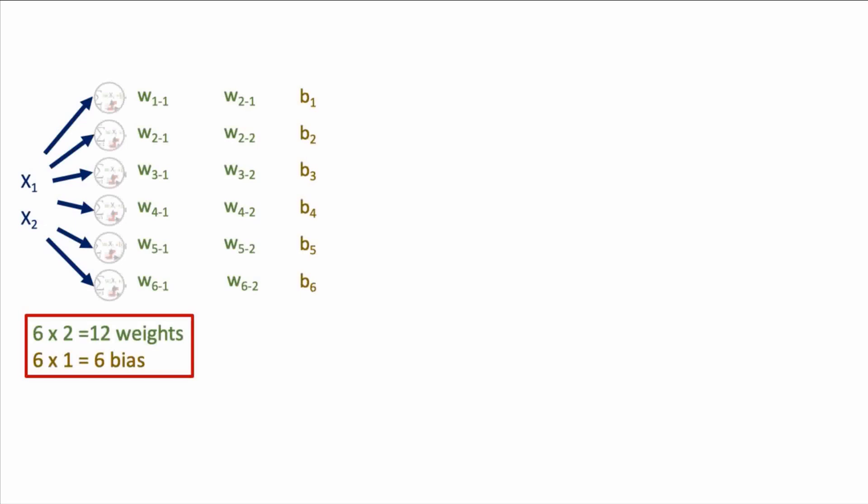Now let's look at the calculation that each neuron does. It takes the weighted sum of its inputs, adds the bias, and passes it through an activation function to produce an output.